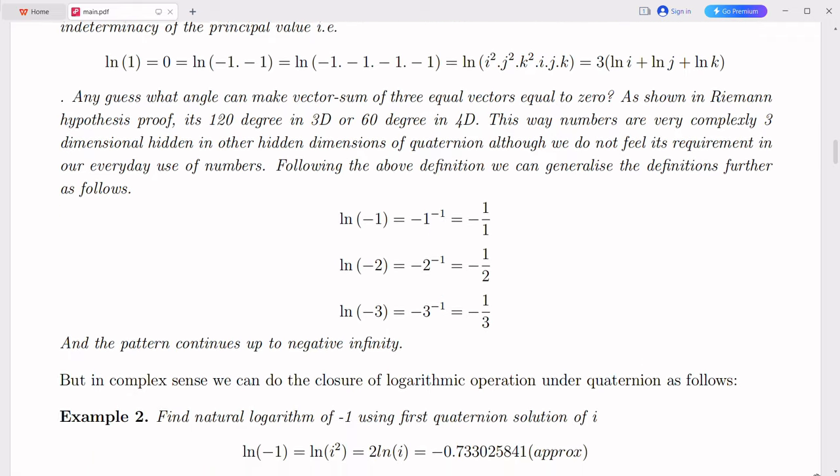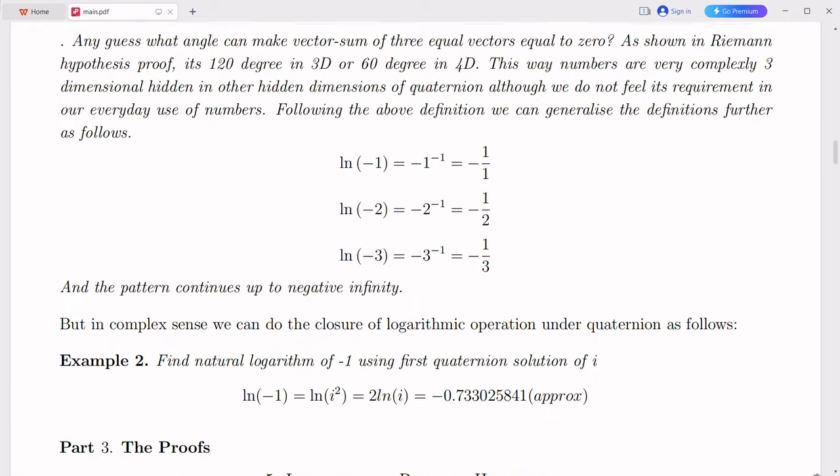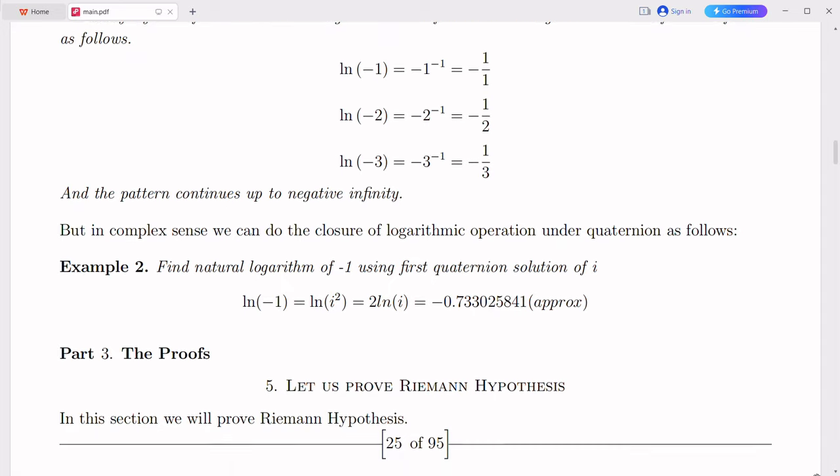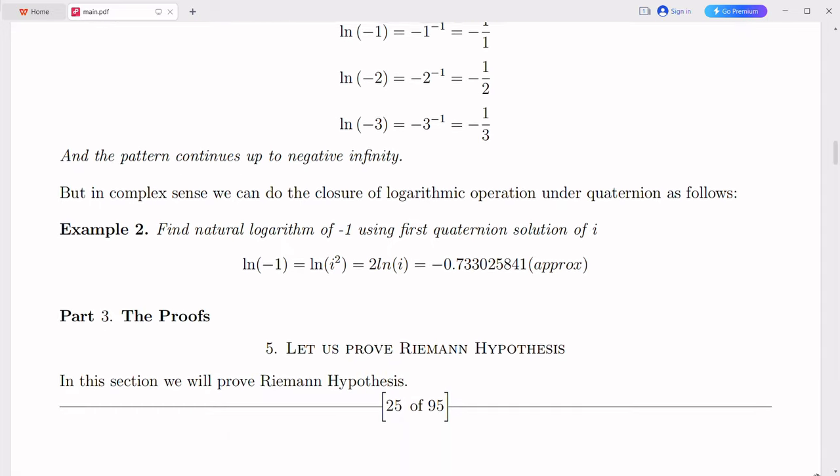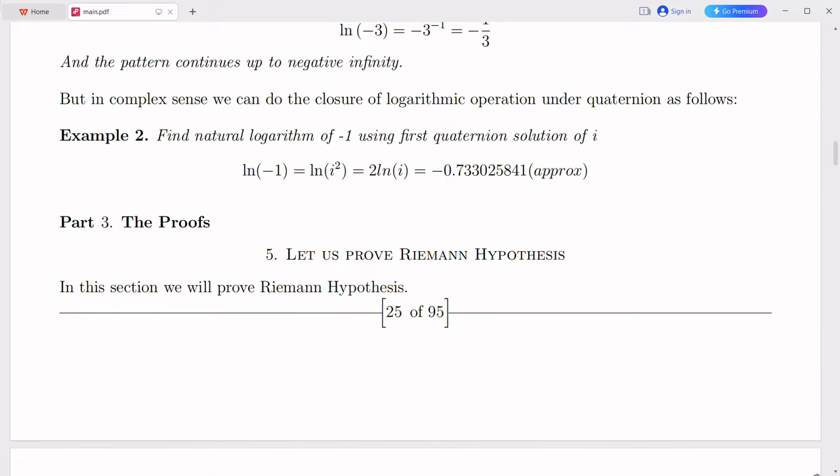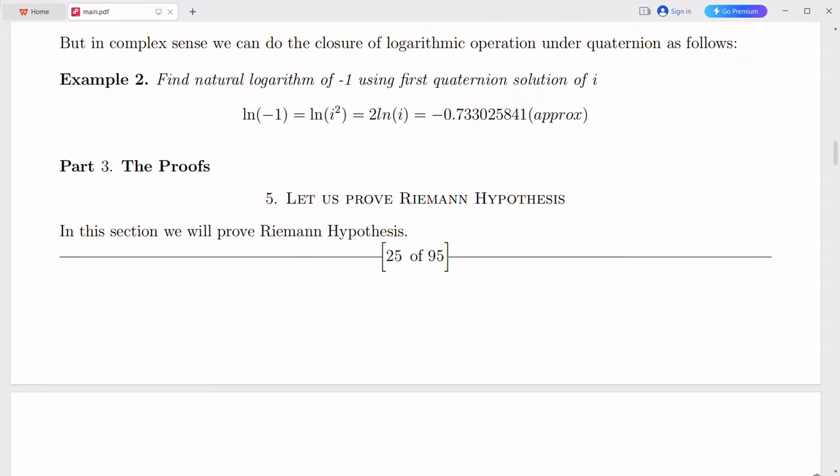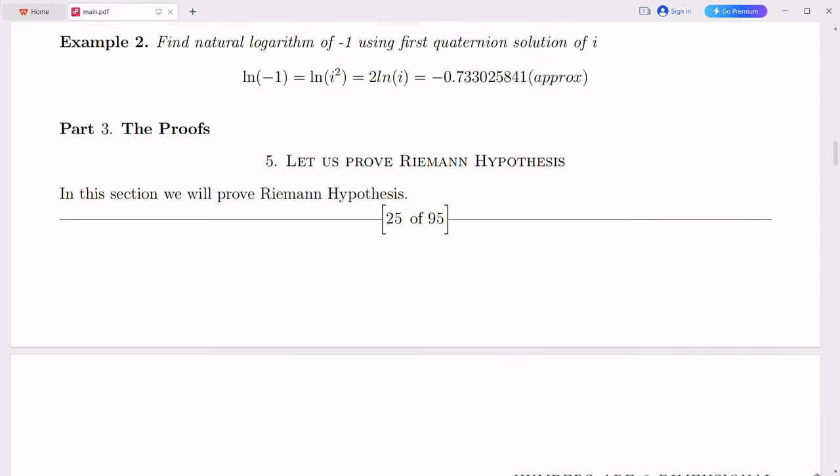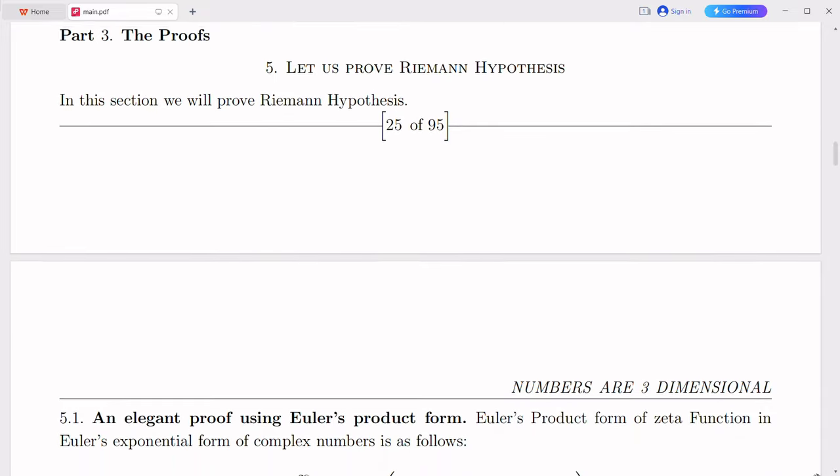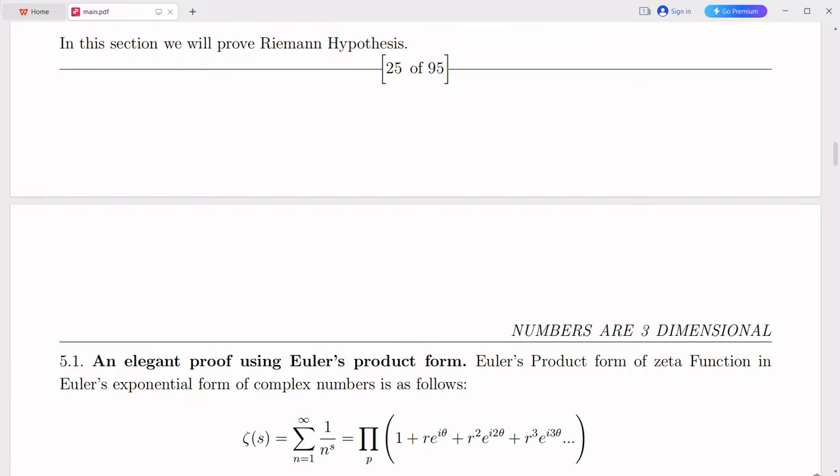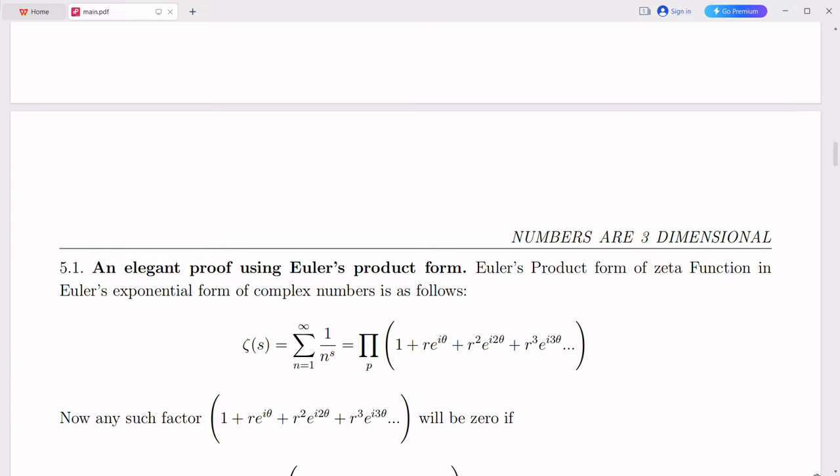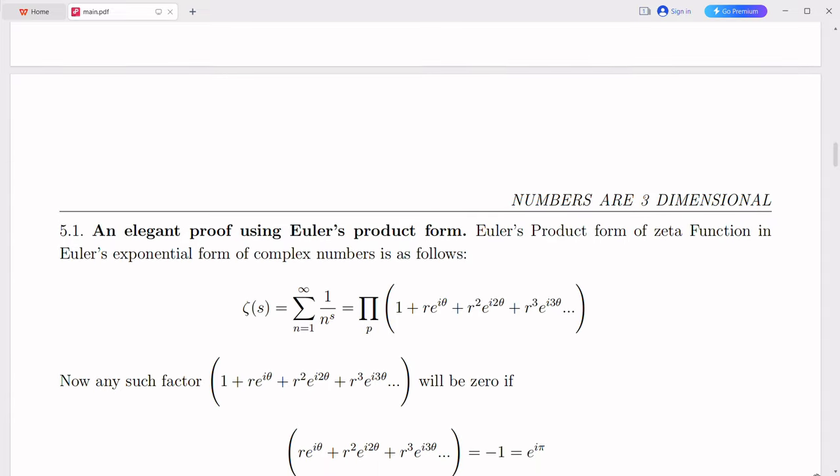It would indeed be a groundbreaking discovery with far-reaching implications across various branches of science, mathematics, and technology if imaginary numbers could be integrated with the real number line. The integration of imaginary numbers with the real number line would lead to a more comprehensive and unified mathematical framework. It would allow for a deeper understanding of complex functions, such as exponential, trigonometric, and logarithmic functions, which play a vital role in various mathematical applications. The development of new mathematical techniques and tools could arise, enabling more sophisticated modeling and analysis in diverse fields.